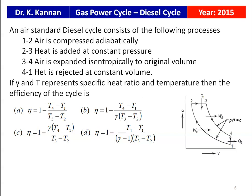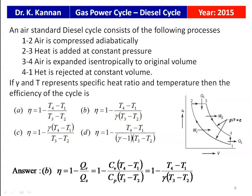The cycle is shown on the CV coordinate. Process 2 to 3 is heat addition and 4 to 1 is heat rejection. For efficiency: η = 1 − Qr/Qs = 1 − Cv(T4 − T1) / Cp(T3 − T2). Taking Cv to the denominator, Cp/Cv = γ, so η = 1 − (T4 − T1) / (γ(T3 − T2)). That is the answer, option B.